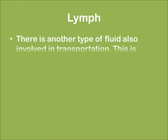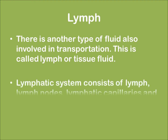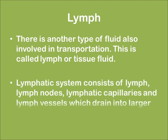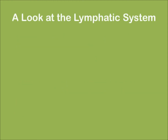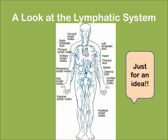Let us learn about lymph. Lymph is another type of fluid also involved in transportation, also called tissue fluid. The lymphatic system consists of lymph, lymph nodes, lymphatic capillaries, and lymph vessels which drain into larger veins. Now let us have a look at the lymphatic system — this is just to get an idea; you need not remember this.